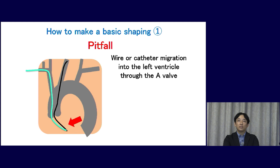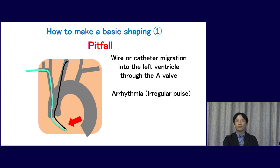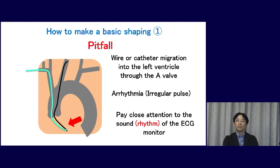In some cases, a wire or catheter may easily migrate into the left ventricle through the aortic valve. At that time, patients may complain of chest discomfort due to arrhythmia. It's mandatory to pay close attention to the rhythm of the ECG. When you notice arrhythmia, the wire or catheter must be withdrawn quickly.